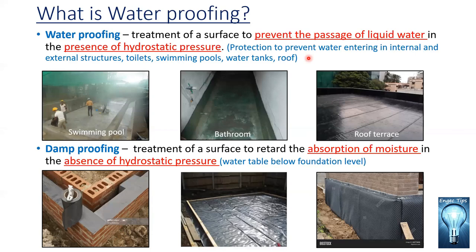Damp proofing means the treatment of a surface to retard the absorption of moisture in the absence of hydrostatic pressure. If we consider substructures below the water table, there is no hydrostatic pressure in that structure. As you can see in the figure, the DPC is applied in the block wall — normally about 150 mm from the existing ground floor.